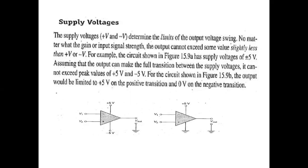If the voltage difference comes out negative, then the output will be negative. The value will be close to the negative supply. If the negative supply is minus 5V, then the maximum output voltage will go around minus 5V.